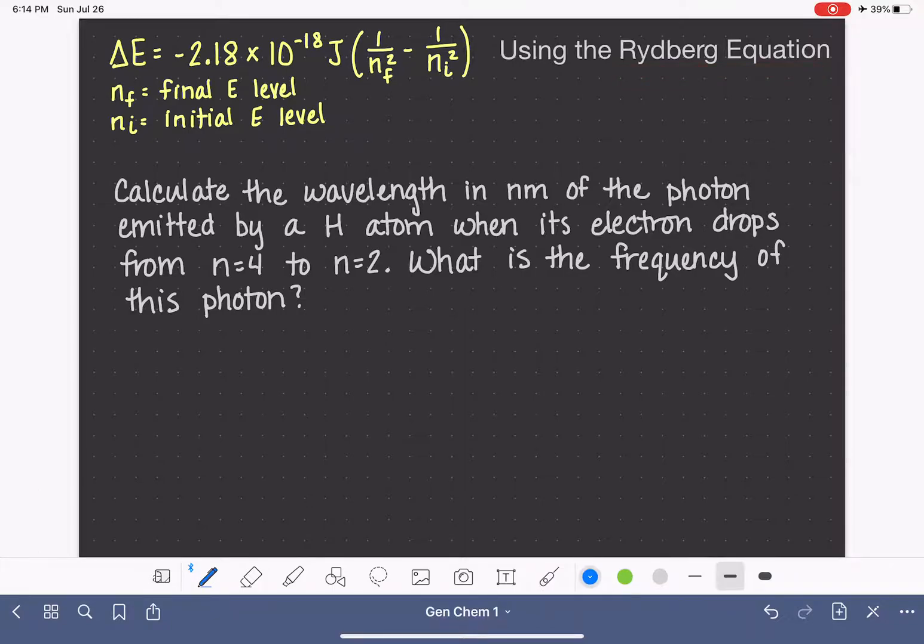And again, I want to make a note here that this equation is only for electron transitions in the hydrogen atom. We don't have an equation to help us calculate the energy of electron transitions for any other atoms, only for hydrogen. The Rydberg equation is right here.